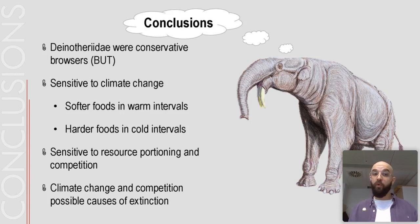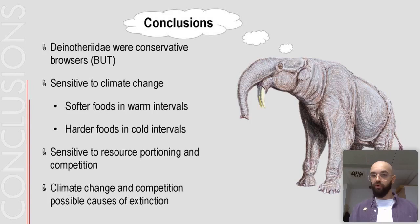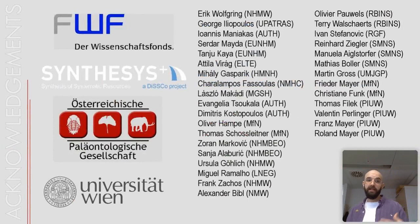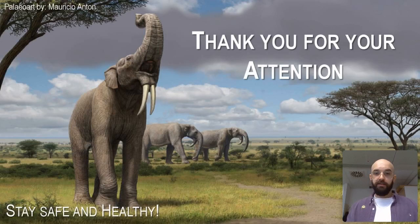To conclude, my results showed that dinotherids were indeed conservative browsers. However, they seem to have been sensitive to climate change — feeding on softer foods during warm intervals and slightly harder foods during colder intervals. They were also possibly sensitive to resource partitioning and competition, and for the first time it is visualized that competition in combination with climate change were the possible causes of extinction of the family from European palaeoenvironments. I'd like to thank the Austrian Science Fund, the Synthesis Project, the Austrian Palaeontological Society, the University of Vienna, and all the people involved in this study. Thank you very much for your attention, and I hope you're all safe and healthy.